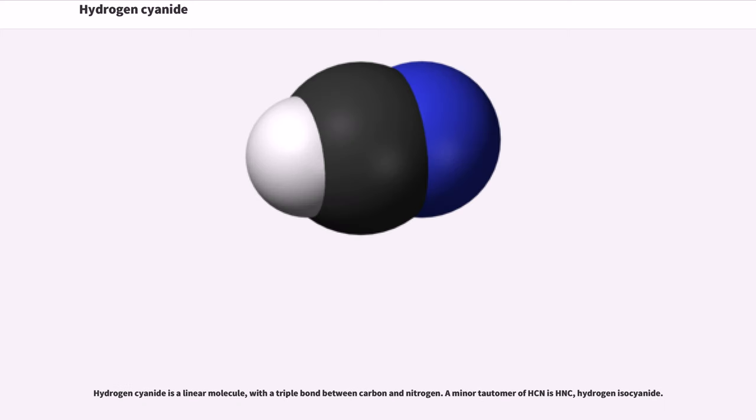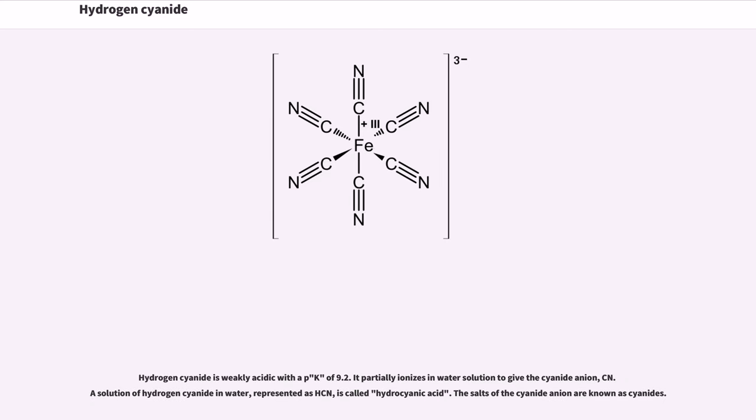Hydrogen cyanide is a linear molecule with a triple bond between carbon and nitrogen. A minor tautomer of HCN is HNC, hydrogen isocyanide. Hydrogen cyanide is weakly acidic with a pKa of 9.2. It partially ionizes in water solution to give the cyanide anion CN-. A solution of hydrogen cyanide in water is called hydrocyanic acid.